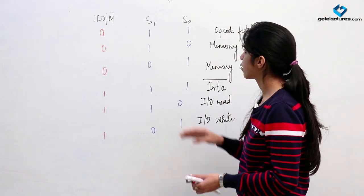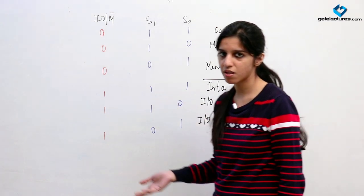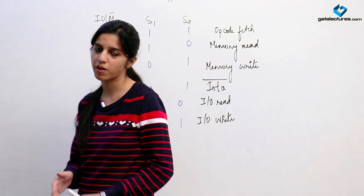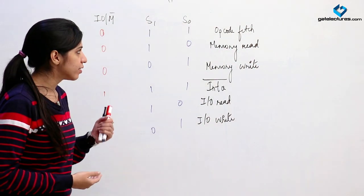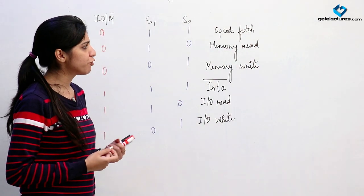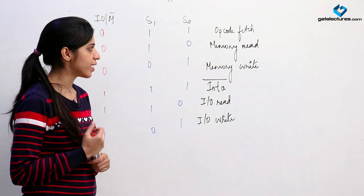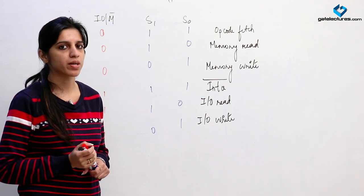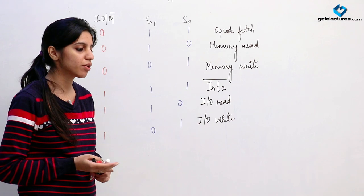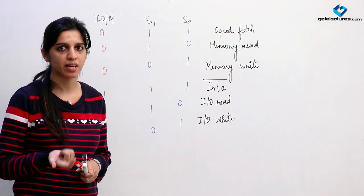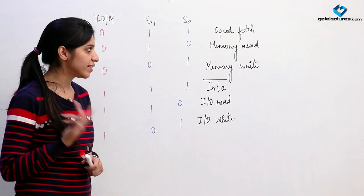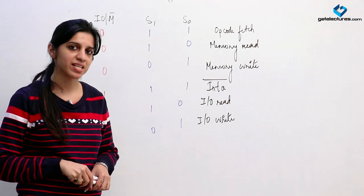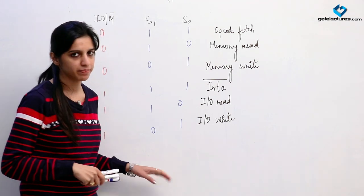This is how you interface memory, output devices, and input devices. If in any case you are writing an ALP to input or output some data from an input-output device, you are going to use the instructions IN and OUT; in case it is memory mapping, then you are going to use STA and LDA.